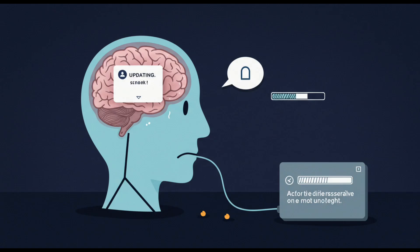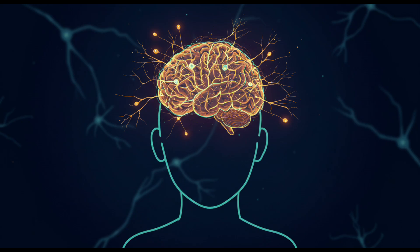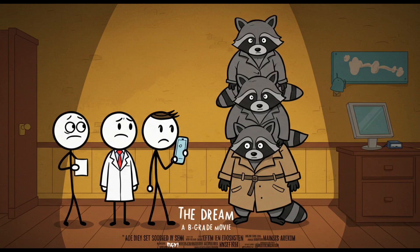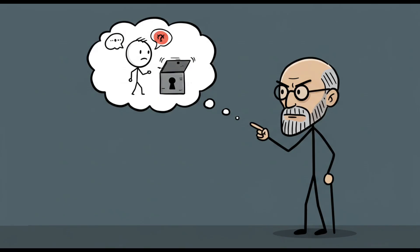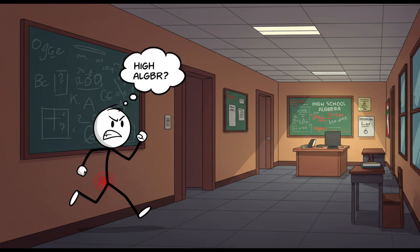Dreams might be your brain cleaning house, like when your computer does a random update at 3am without asking. Or maybe they're just your neurons firing off nonsense, and your brain, desperate for a plot, slaps together a B-grade movie starring your ex, your dentist, and three raccoons in a trench coat. Freud famously said dreams are about repressed desires, but if that's true, then a lot of us secretly want to be late for high school algebra, despite being 32 with lower back pain.